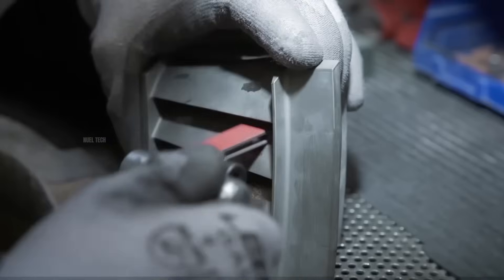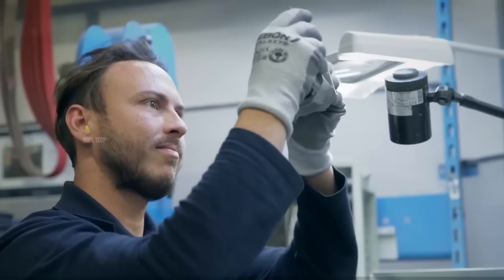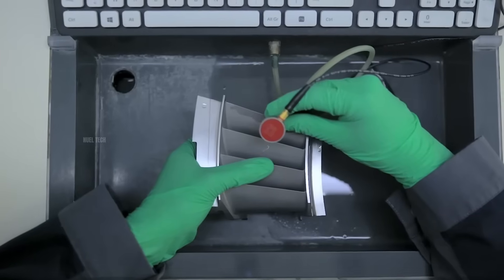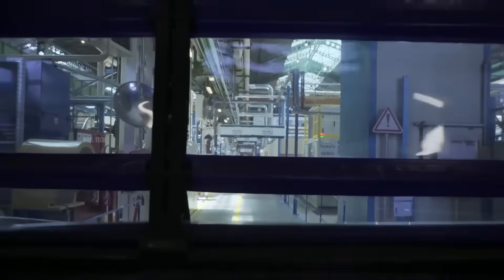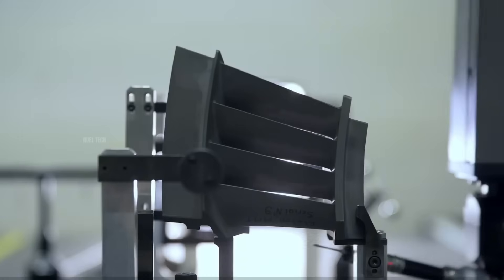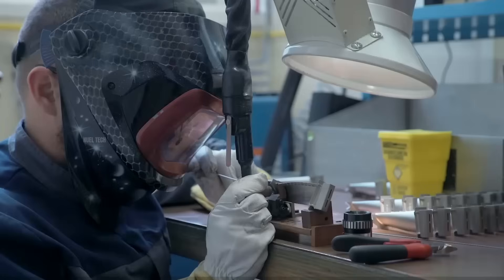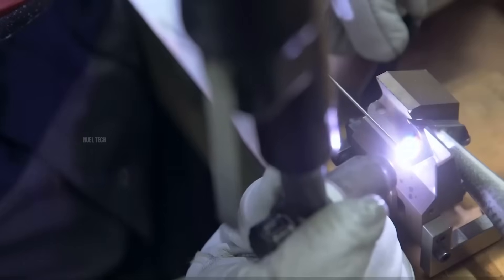After cleaning, the blades are inspected again for any cracks, leaks, or other defects. Very small cooling holes are then drilled using precision techniques such as electrical discharge machining. Some blades are also coated with a thermal barrier coating, a ceramic layer that further protects the surface from extreme heat.